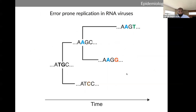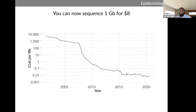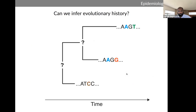Luckily, as viruses replicate, they keep accumulating mutations due to their error-prone replication process. A lot of information about the transmission of a virus is actually encoded in the genome itself. Coupled with the rapidly decreasing cost of sequencing, you have an opportunity to use sequencing to track viral outbreaks. The question remains: given a certain set of genomes sequenced from a population, can you actually go back in time and accurately reconstruct the evolutionary history?